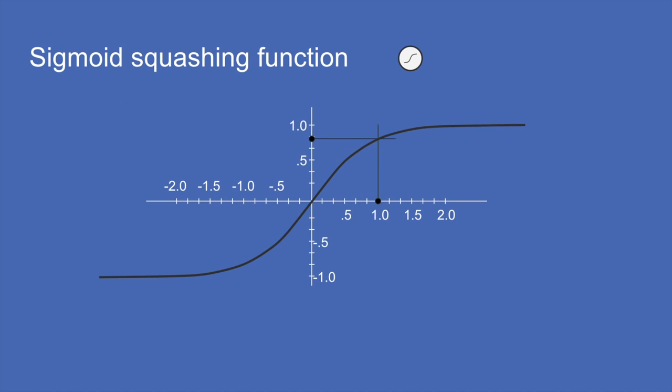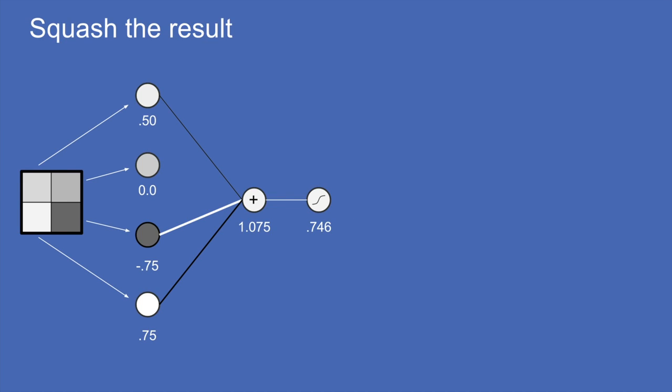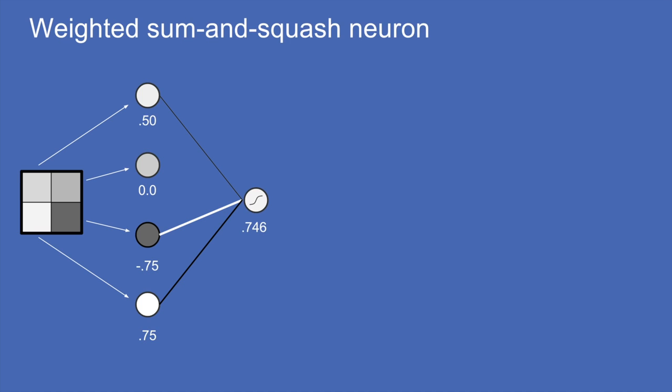As your input number gets larger, your output also gets larger but more slowly, and eventually the answer is always less than one. Similarly when you go negative, the answer is always greater than minus one. This ensures the neuron's value never gets outside the range of plus one to minus one, which is helpful for keeping computations in the neural network bounded and stable. After summing the weighted values and squashing the result, you get the output — in this case 0.746. We can collapse all that down: this is a neuron that does a weighted sum and squashes the result.